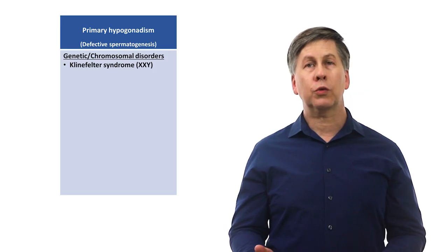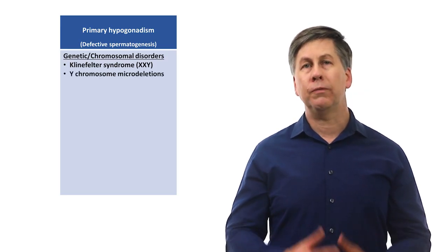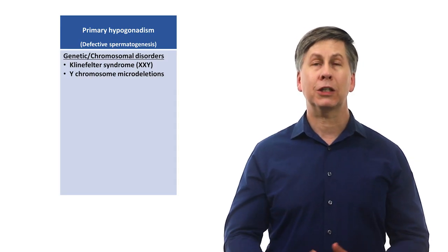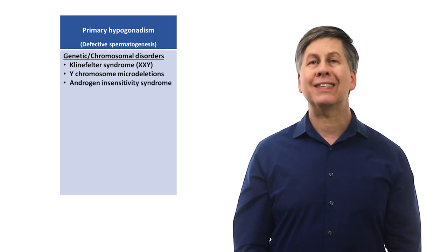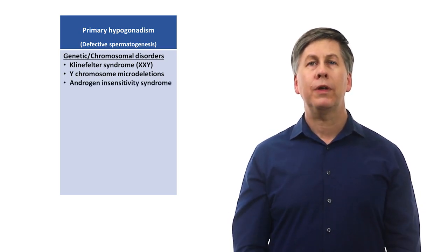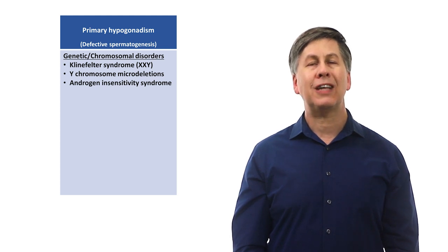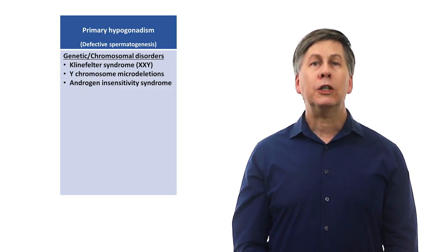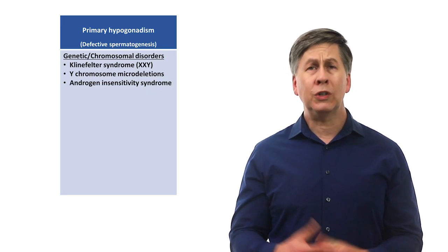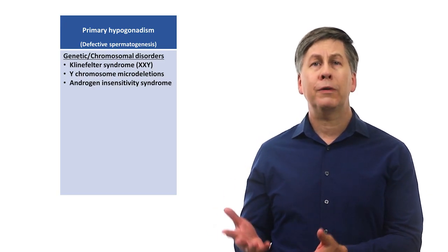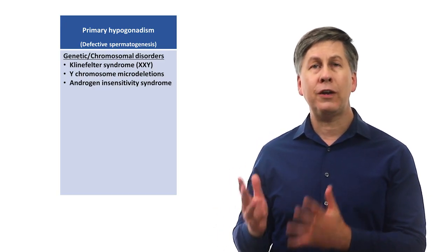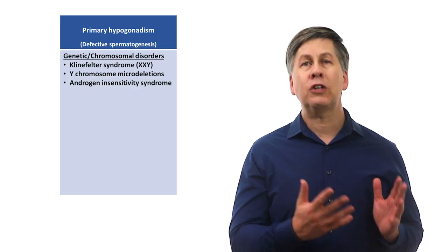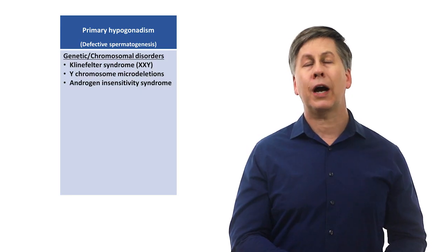Klinefelter syndrome has a spectrum of clinical severity ranging from asymptomatic, to signs of decreased testosterone noticeable after puberty such as gynecomastia and sexual dysfunction, to early onset osteoporosis, tall stature, and intellectual disability. Another congenital disorder is a Y chromosome microdeletion, in which a tiny but important part of the Y chromosome that controls spermatogenesis is missing. A genetic disease called androgen insensitivity syndrome can also cause infertility, in which the androgen receptor contains a mutation that prevents testosterone from binding to it normally. As with Klinefelter syndrome, the spectrum of disease is very variable, with some individuals having an XY karyotype but otherwise conventional female phenotype, some are XY individuals born with ambiguous genitalia, and others are phenotypic males with infertility, small penis, and gynecomastia.